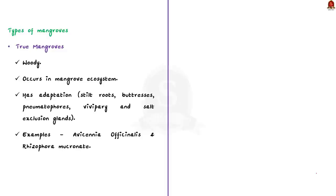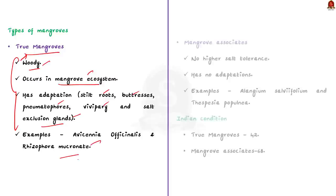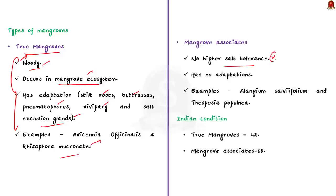Mangroves are classified into true mangroves and mangrove associates. True mangroves are woody, occur only in mangrove ecosystems, and have morphological adaptations like stilt roots, buttress roots, pneumatophores, vivipary, and salt exclusion glands. Common examples include Avicennia officinalis and Rhizophora mucronata. Unlike true mangroves, mangrove associates do not show higher salt tolerance and grow best under fresh water. Examples include Allangium salvifolium. In India there are about 42 true mangrove species and 68 mangrove associates.